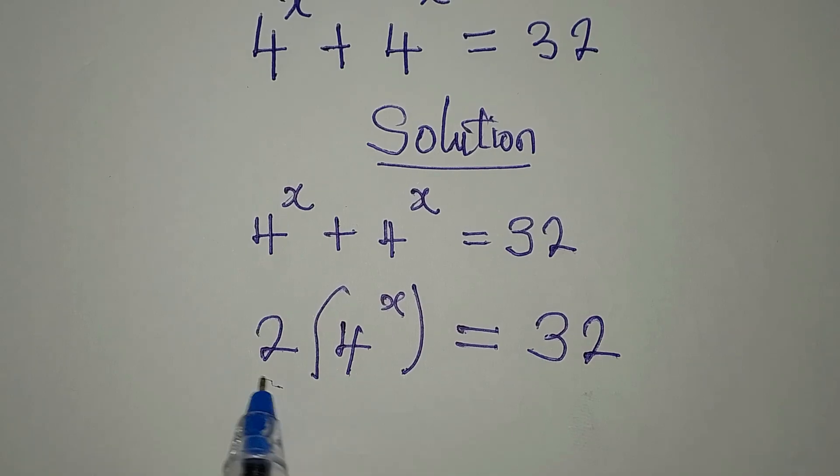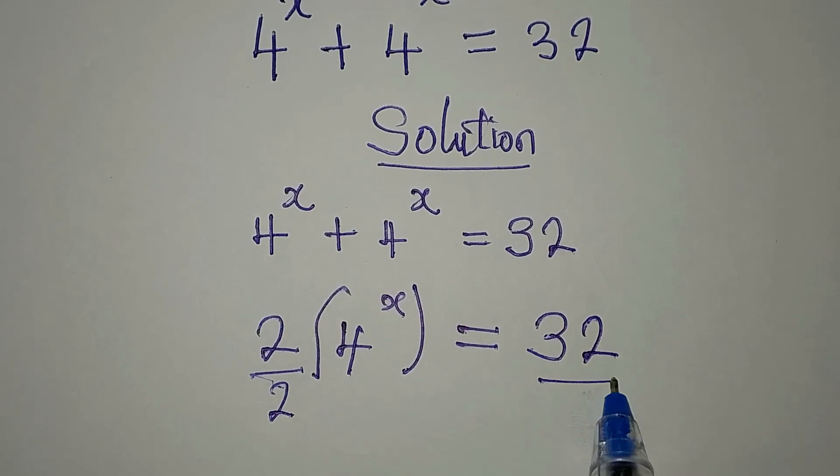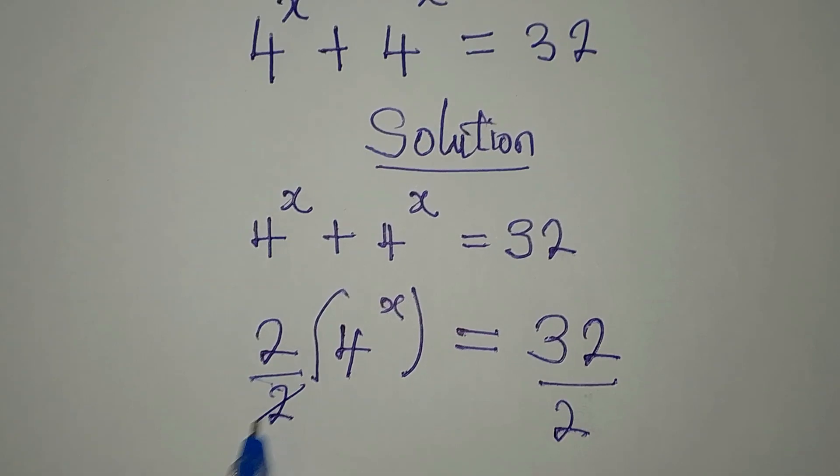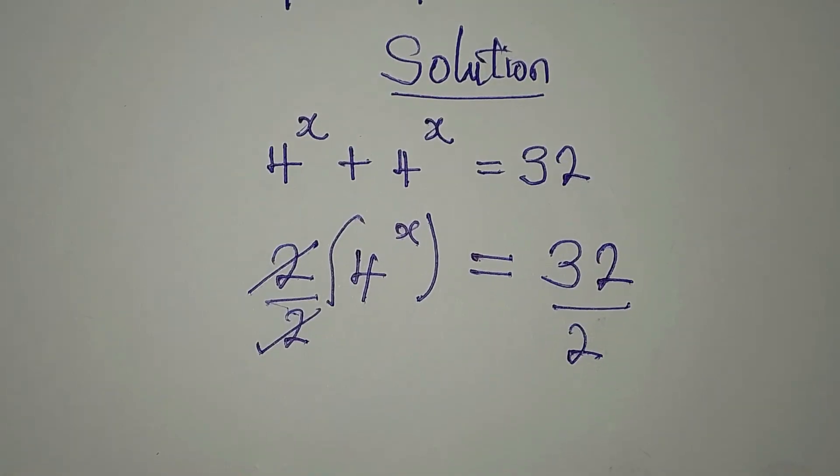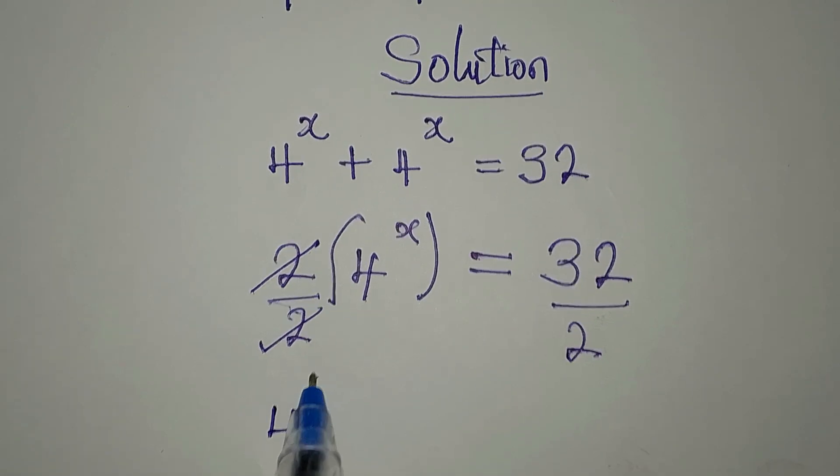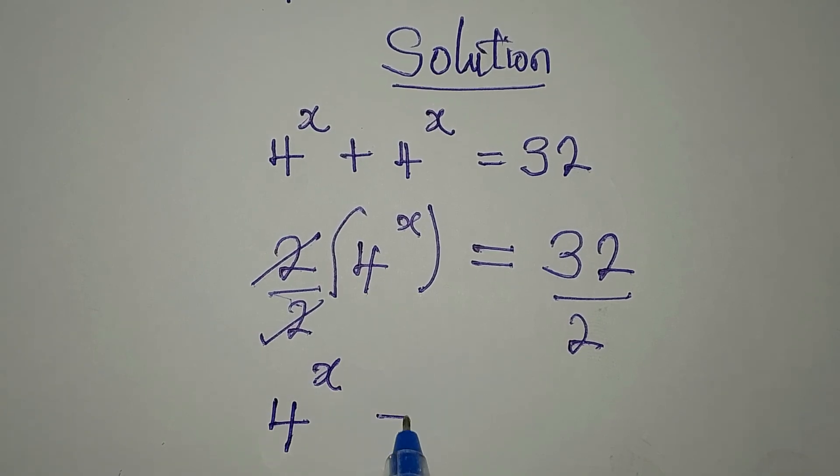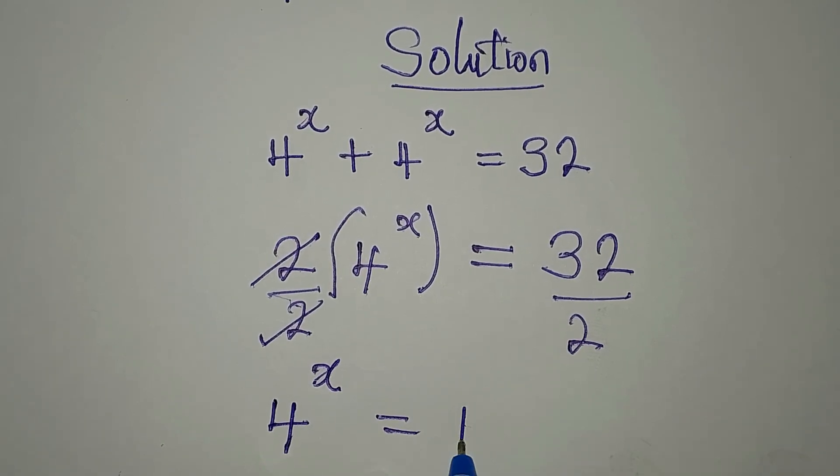Now, the next thing is to divide this by 2 and divide this by 2. This goes there. Now, do you know that here we'll have 4 to the power of x and here we'll have 16?